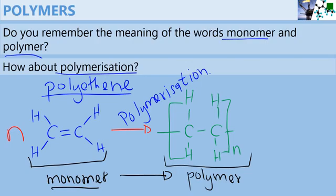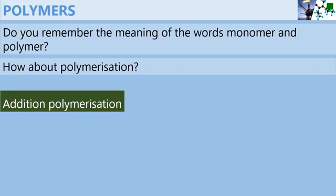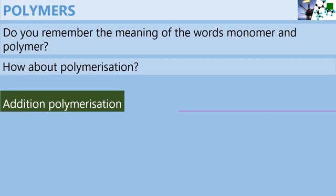So you can easily define all the terms that we learned in our previous chapters. Now there are two types of polymerization. The first one is known as addition polymerization, and the second one is known as condensation polymerization.